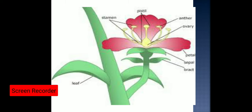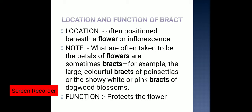Here is the flower with its four whorls. Below the sepal — that is, below the thalamus — this leaf-like structure is known as the bract. The bract is often positioned beneath the flower or inflorescence.